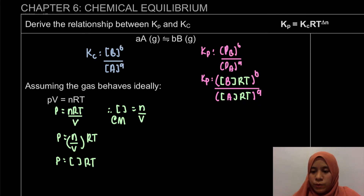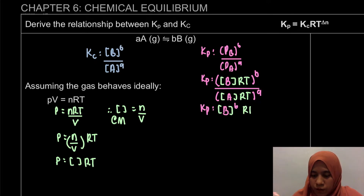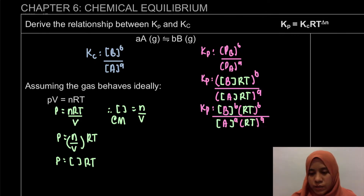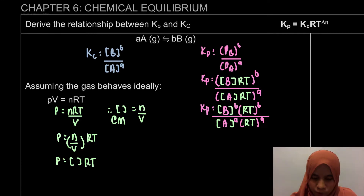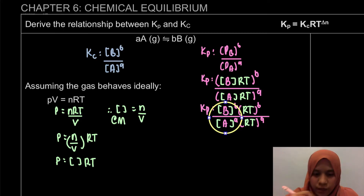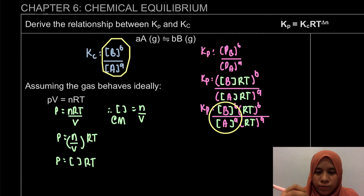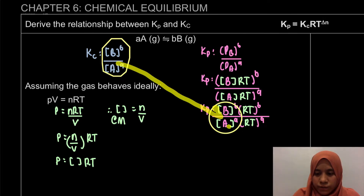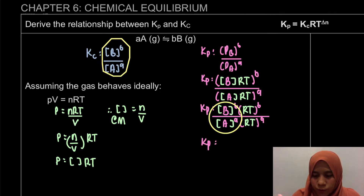Now I'm going to expand the equation. Once expanded, you can see that this part is actually the same as our Kc — concentration of B to the power of b, divided by concentration of A to the power of a. So here, we can write Kp is equal to Kc times something.